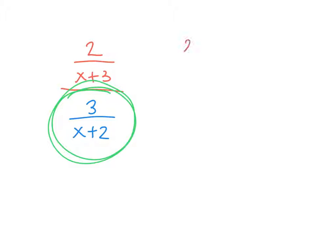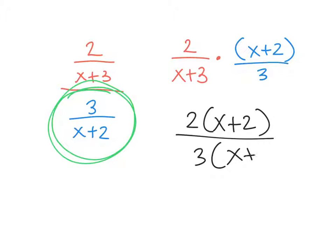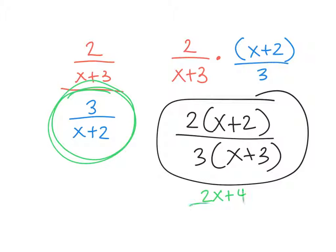Let's do a complex fraction. So this is a complex fraction. So you're going to flip over this. So it's going to be 2 over x plus 3 times x plus 2 over 3. You can't factor anything out. So it's going to be 2 times x plus 2 over 3 times x plus 3. If you want to, you can distribute this. So it's 2x plus 4 over 3x plus 9.